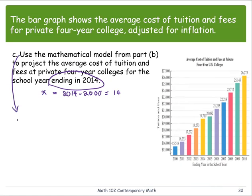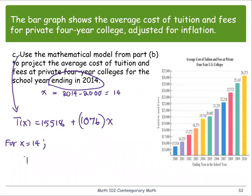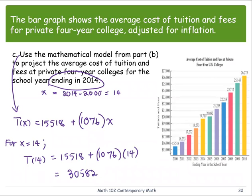Using the mathematical model T(X) = 15518 + 1076X with X = 14: T(14) = 15518 + 1076 × 14. The result is $30,582. So the estimated average cost of tuition and fees at private four-year colleges for the school year ending in 2014 would be $30,582.